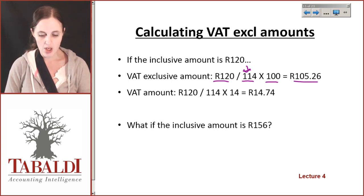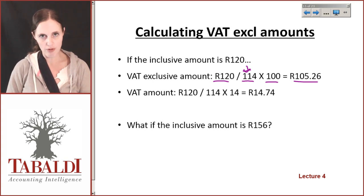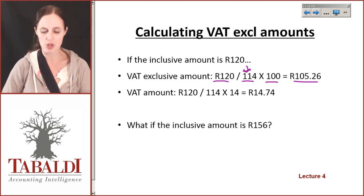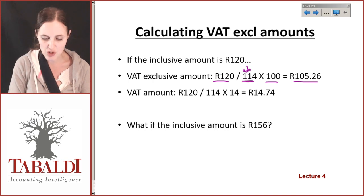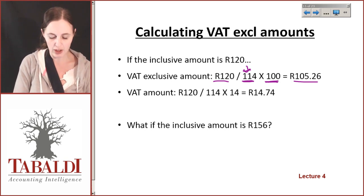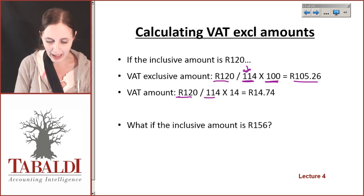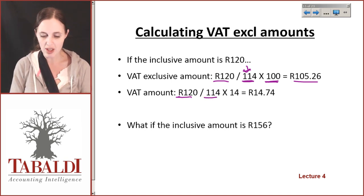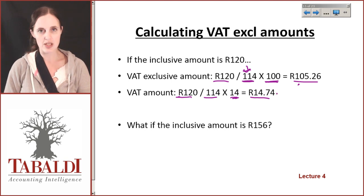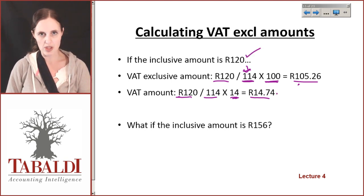So: 120 divided by 114, times 100. 114% means there are 114 parts, so we break this down into its 114 parts and then say, I want to know what the 100 is. The VAT amount itself we calculate by saying 120 divided by 114 parts, multiplied by 14, which equals 14.74. Take 105.26, add 14.74, and you get 120 rand.